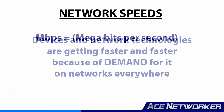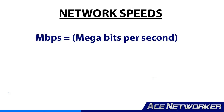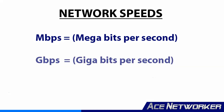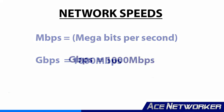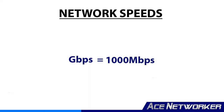Presently, we measure network speeds in megabits per second, or Mbps, and gigabits per second, which is also written as Gbps, with a capital G. When we say 1 gigabit per second, that's roughly equal to 1000 megabits per second.